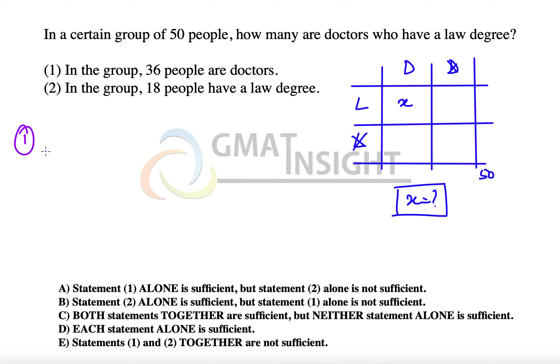So the first statement says that this number is 36, but we do not know the value of x because 36 is comprised of these two regions and we do not know the second region. Therefore, the first statement alone is not sufficient to answer the question, and options A and D are out.